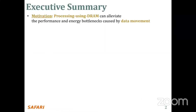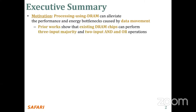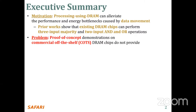Let's start with an executive summary. The motivation is that processing using DRAM can alleviate the performance and energy bottleneck caused by frequent data movement between main memory and processing units. Prior work showed that off-the-shelf DRAM chips can perform three-input majority and two-input AND and OR operations.